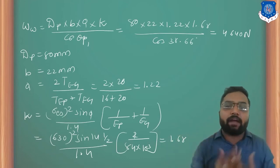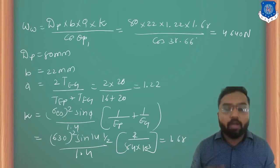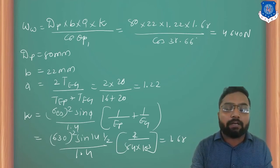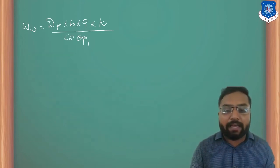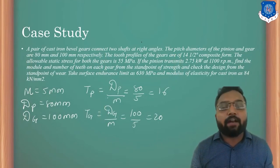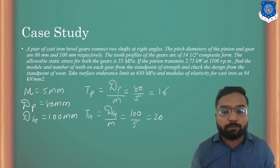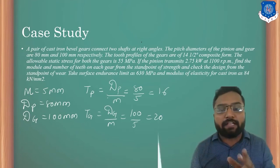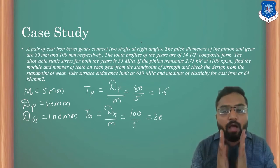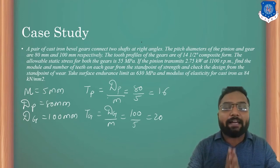Let's recap the whole example once again. The example starts with finding the module and number of teeth, given the diameter of the pinion and diameter of the gear. Based on the input criteria — power and its strength — we found Wt previously. Depending on Wt, we found the module, completing the first portion. Then we calculated Tp = Dp/M = 80/5 = 16 and Tg = Dg/M = 100/5 = 20.